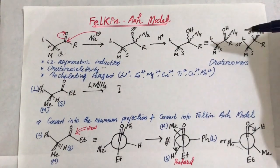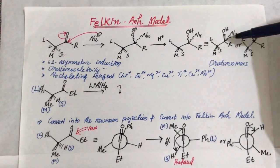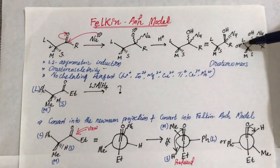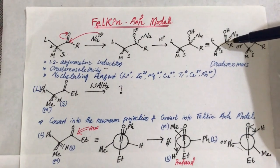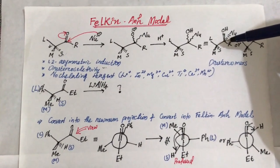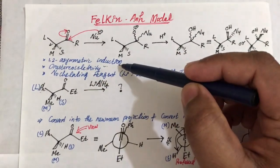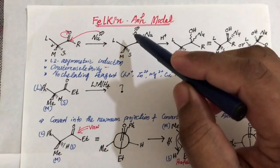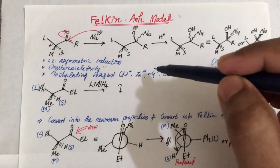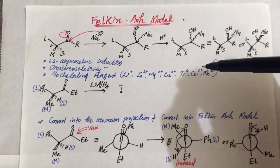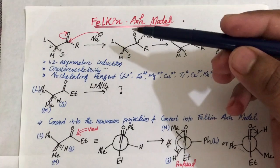This model is used to predict which one of the two diastereomers is the major product — that is the charm of this model. It is called diastereoselective asymmetric induction. Since a new chiral center is formed, it is also called 1,2-asymmetric induction. Importantly, the Felkin-Anh model is applicable only when the reagent is free from lithium, zinc, magnesium, copper, titanium, CDM, or manganese. If those metals are present, the selectivity follows the Cram chelate model instead.